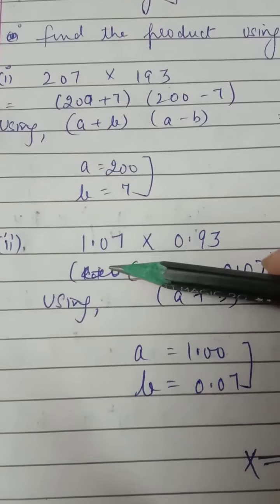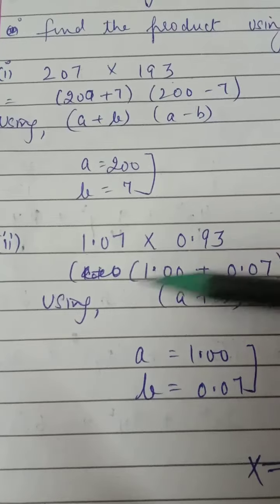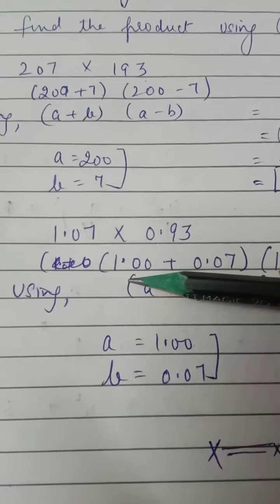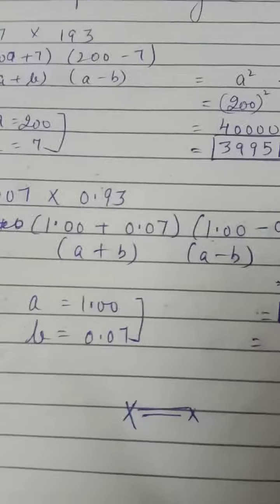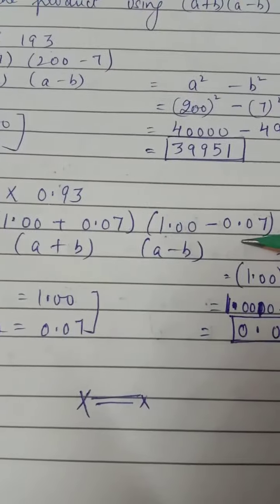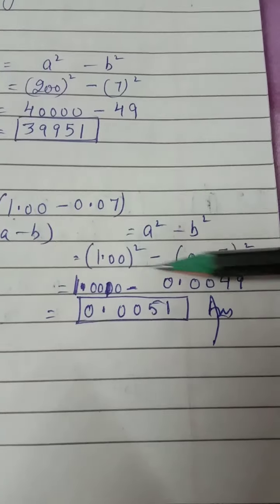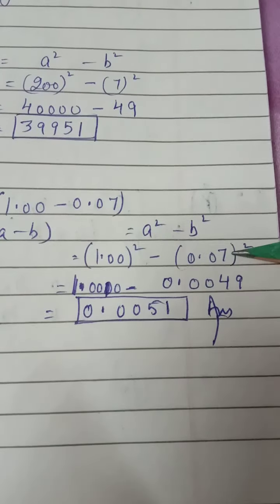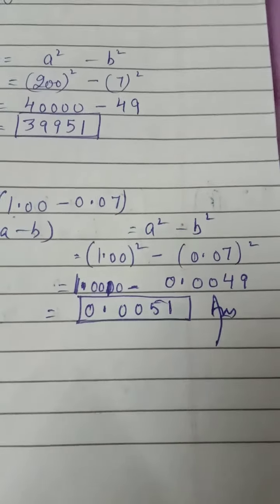Same goes for 1.07 × 0.93: taking 1 as the common base, 0.07 is being added and then 0.07 is being subtracted, using (a + b)(a - b). Squaring the first minus squaring the second gives the answer 0.9951.